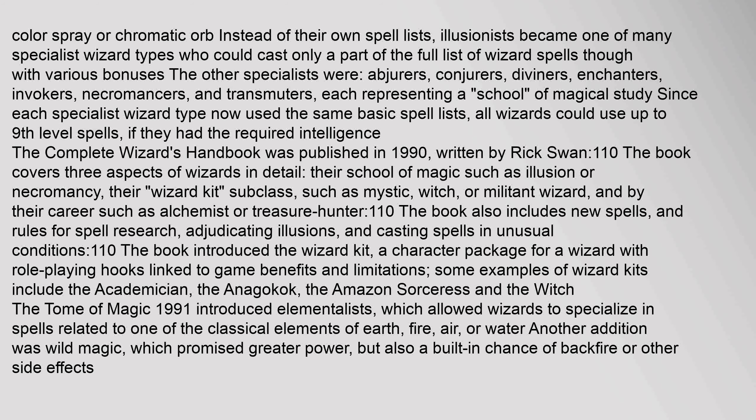The book introduced the wizard kit — a character package for a wizard with role-playing hooks linked to game benefits and limitations. Some examples of wizard kits include the academician, the anagokuk, the amazon sorceress, and the witch. The Tome of Magic (1991) introduced elementalists, which allowed wizards to specialize in spells related to one of the classical elements: earth, fire, air, or water. Another addition was wild magic, which promised greater power but also a built-in chance of backfire or other side effects.